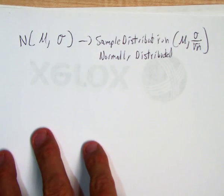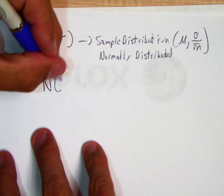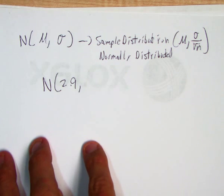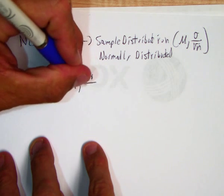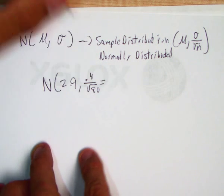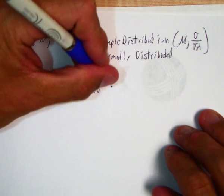What's the mean? We're going to have a normal model with a mean of 2.9, and the standard deviation is going to be 0.4 divided by the square root of 80. If you do 0.4 divided by the square root of 80, you get 0.045.